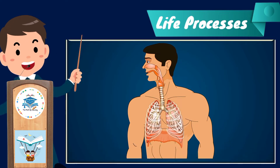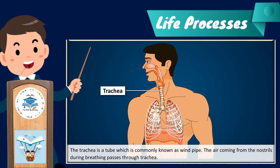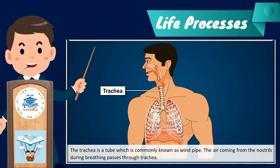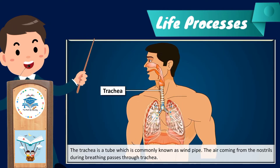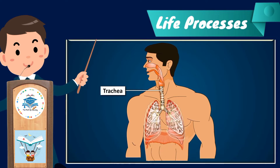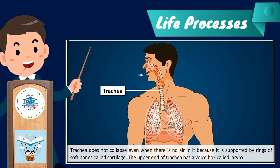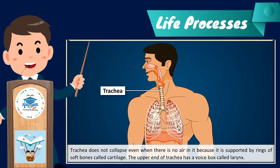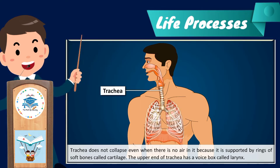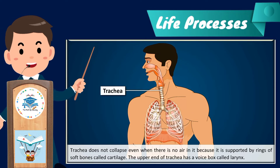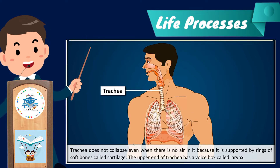The trachea is a tube commonly known as the windpipe. The air coming from the nostrils during breathing passes through the trachea. The trachea does not collapse even when there is no air in it, because it is supported by rings of soft bones called cartilage.